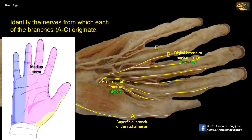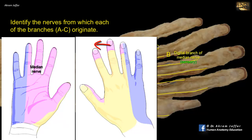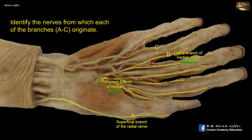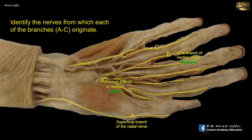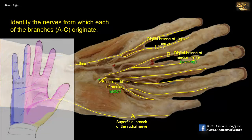It should be mentioned that at the tips of the fingers, the digital branches on the palmar side bend dorsally and supply the nail beds and parts of the dorsal surfaces of the fingers as well. The ulnar nerve in the palm divides into superficial and deep branches. This is the superficial branch of the ulnar nerve. You can see how it enters the palm superficial to the flexor retinaculum, lateral to the pisiform bone, and medial to the ulnar artery. The superficial branch divides to supply adjacent sides of the medial one and a half fingers. So C is a branch of the ulnar nerve supplying the ulnar side of the ring finger.